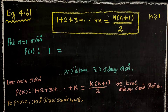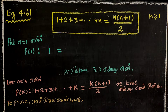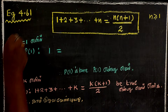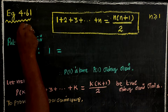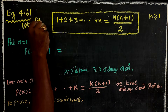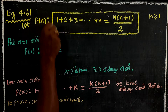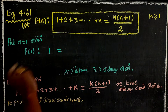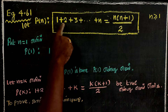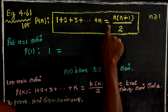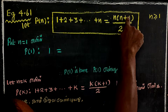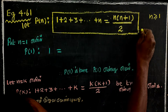Now, let's prove it. If n is equal to k, the statement 1 plus 2 plus 3 plus etcetera plus n is equal to n(n+1)/2 holds.